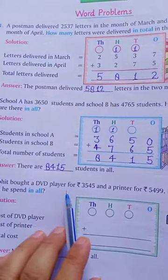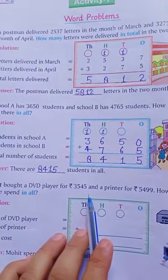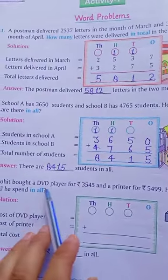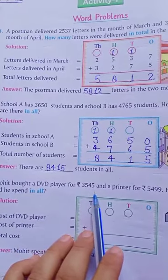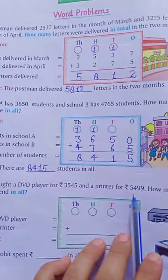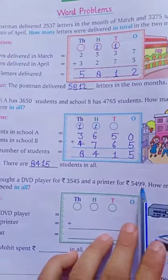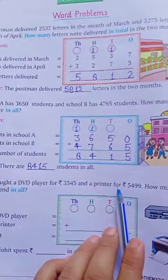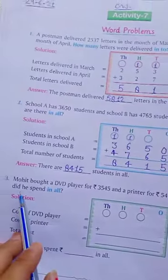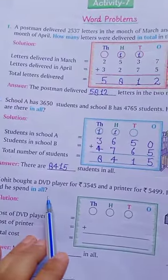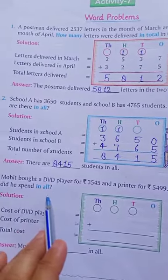Mohit bought a DVD player for 3,545 and a printer for 5,499. Mohit buys a DVD player for rupees 3,545 and a printer for this amount. Okay. How many money did he spend in all? We need to find how much money he spent total.